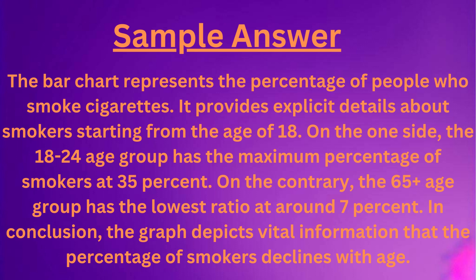The 18 to 24 age group has the maximum percentage of smokers at 35%. On the contrary, the 65 plus age group has the lowest ratio at around 7%. In conclusion, the graph depicts vital information that the percentage of smokers declines with age.